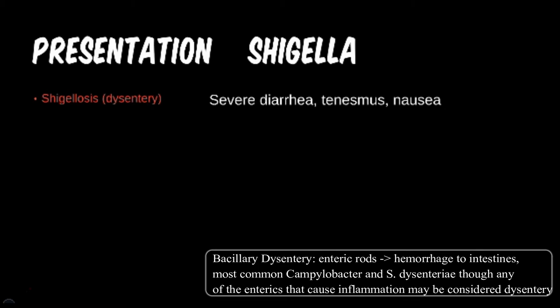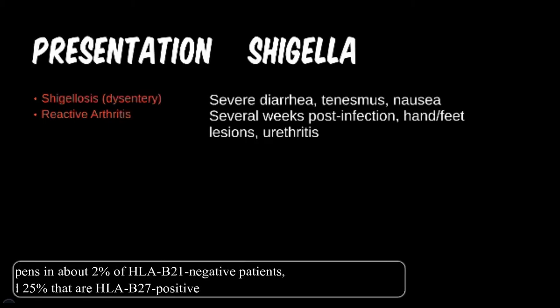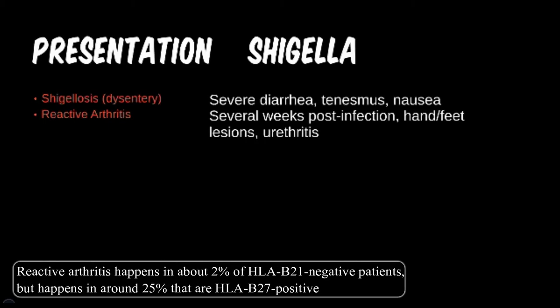Another commonality we see in Shigella and Campylobacter is the post-infection complications. In particular, this patient will have trouble using their hands and feet, and it hurts when they pee. The post-infection sequela of reactive arthritis is one of the popular test questions. They can't see, can't pee, and can't climb a tree.